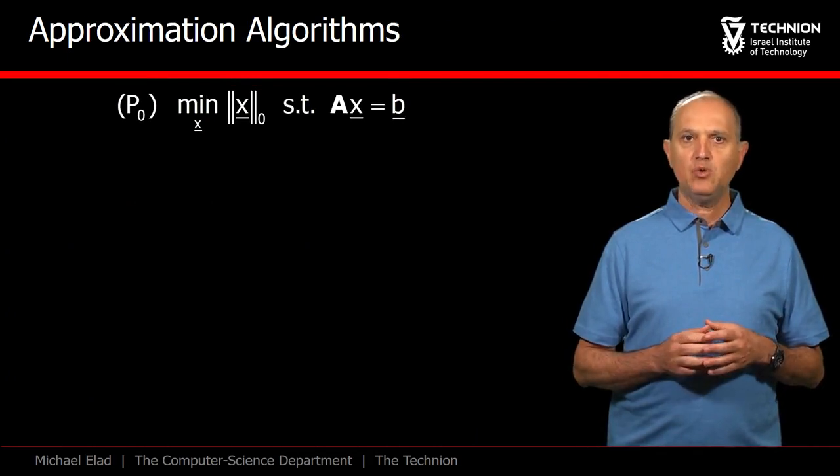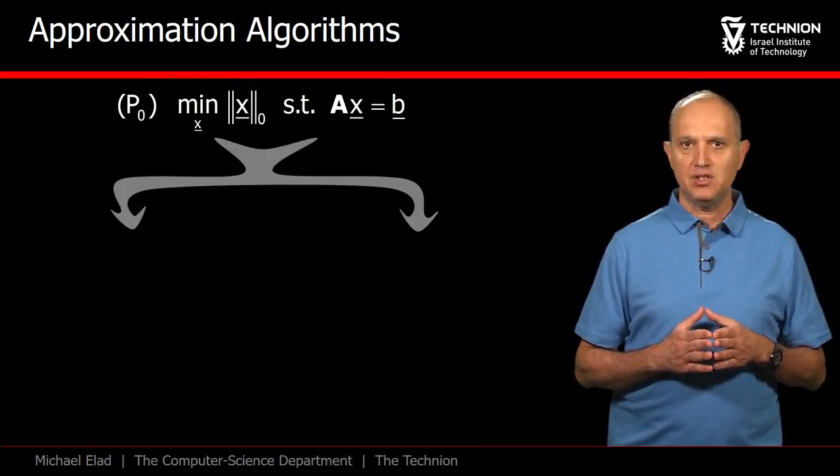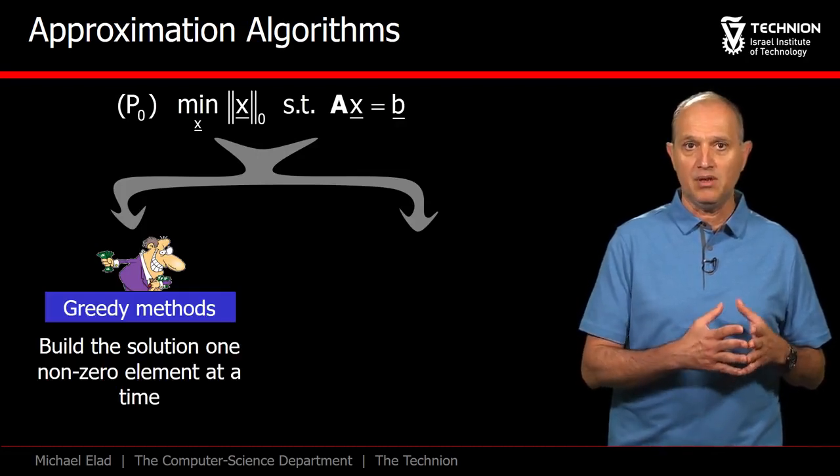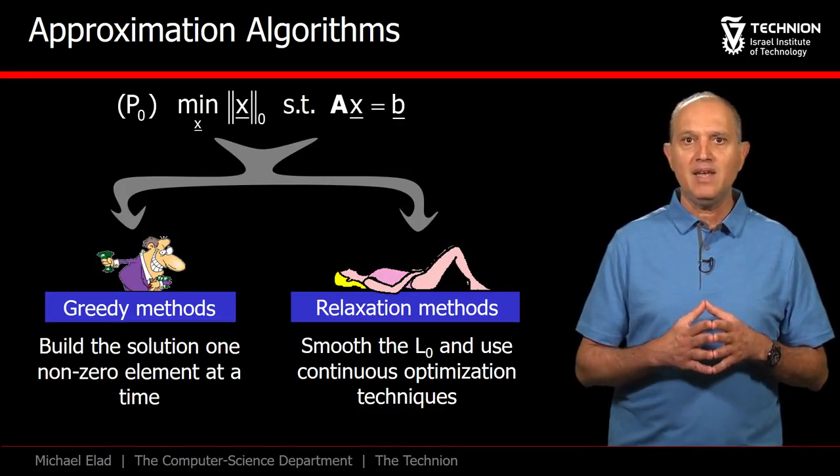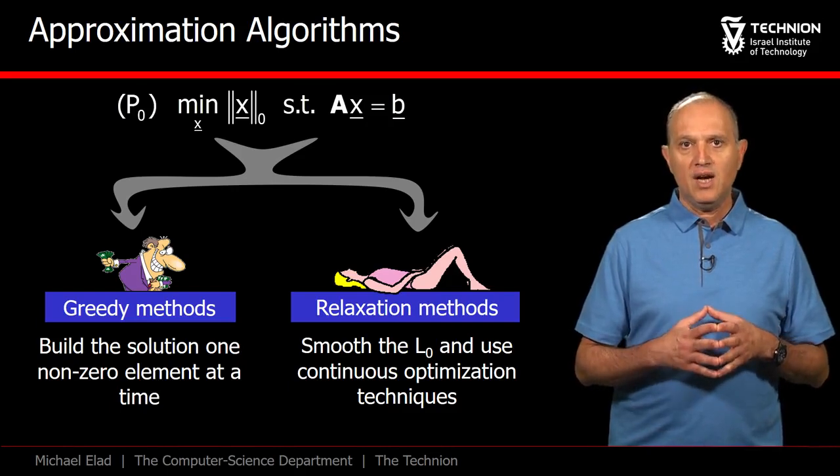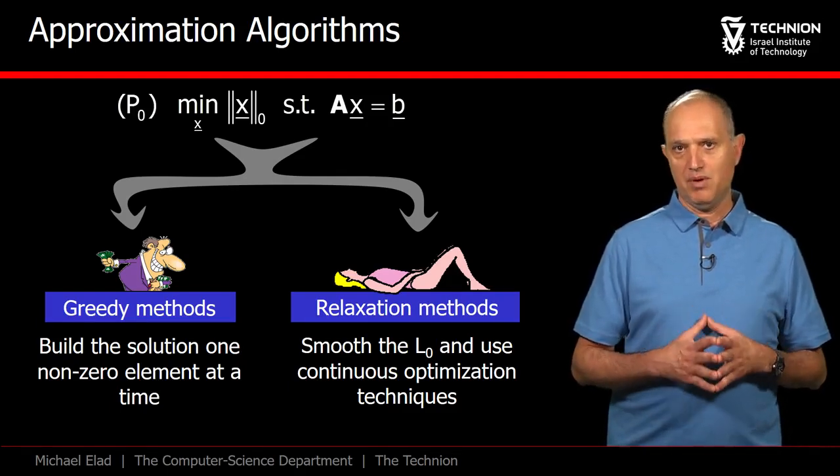So to summarize, when aiming to approximate the solution of P0, we have two very different strategies: the greedy methods that emphasize the discrete nature of the problem and build the support, and the relaxation methods that smooth P0 to become a pleasant-to-handle continuous optimization task. We shall now dive into these two branches in more details, and we'll start with the greedy path.